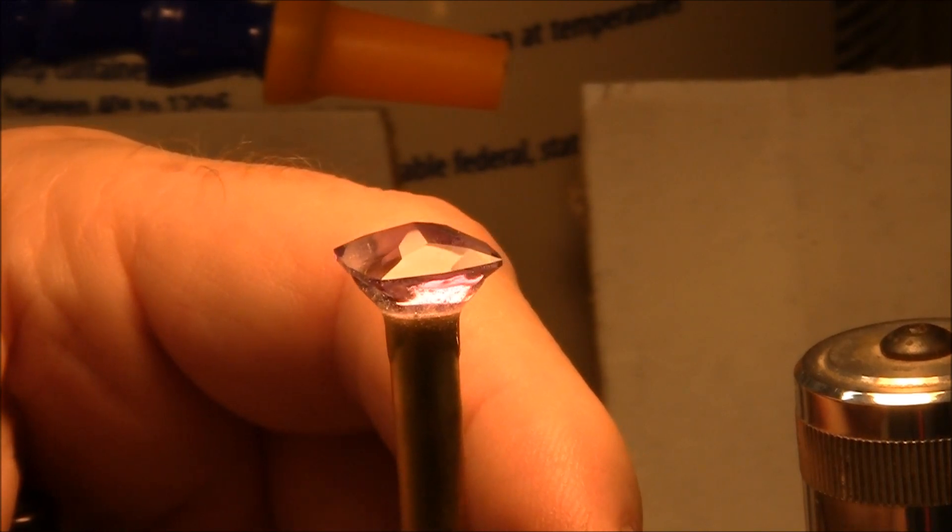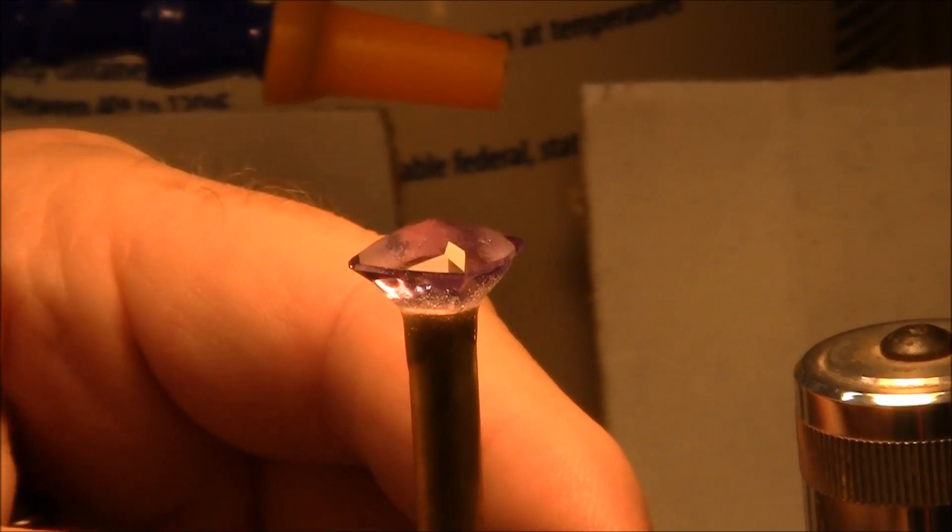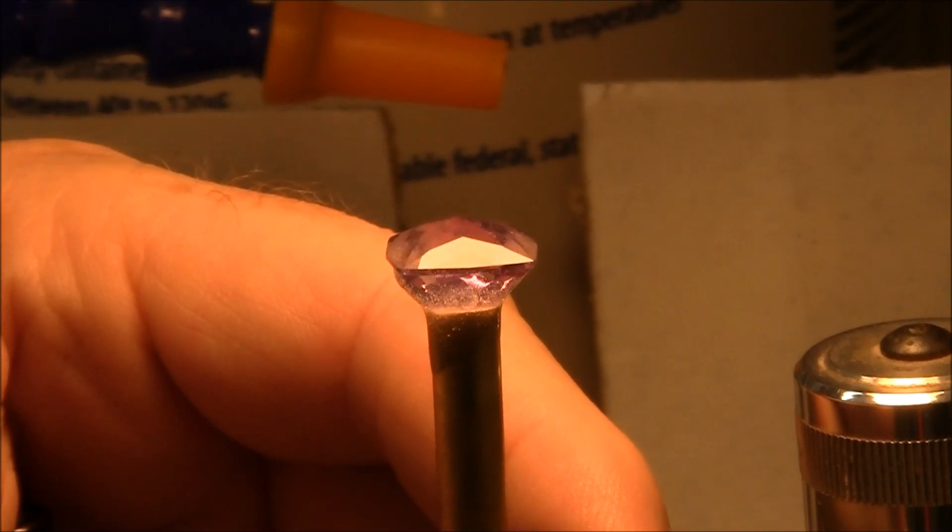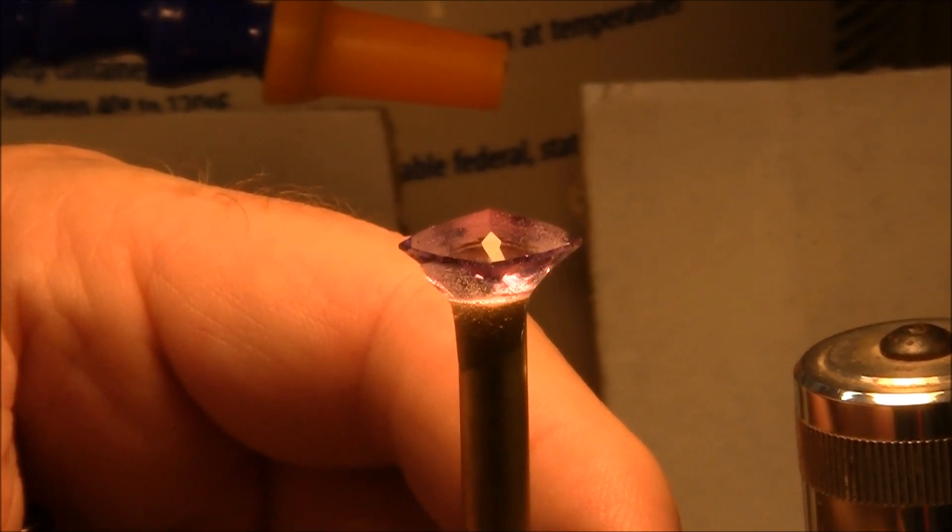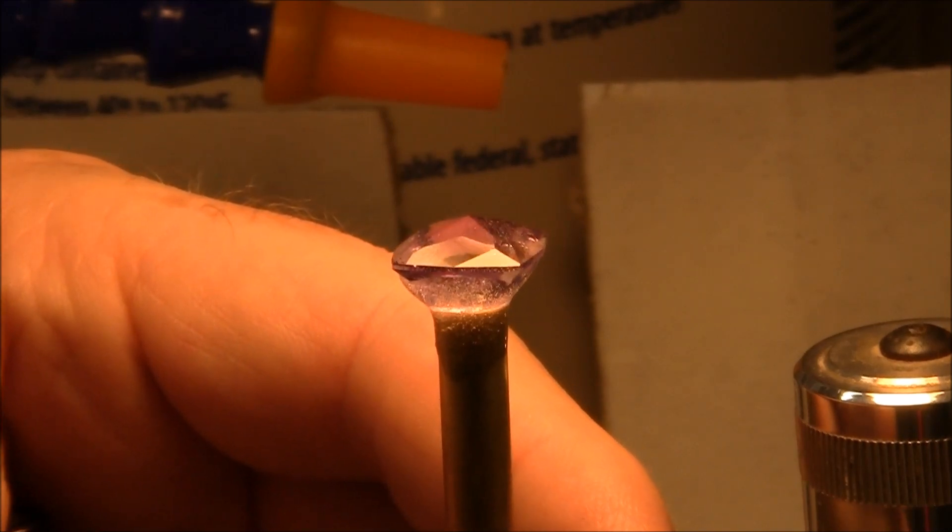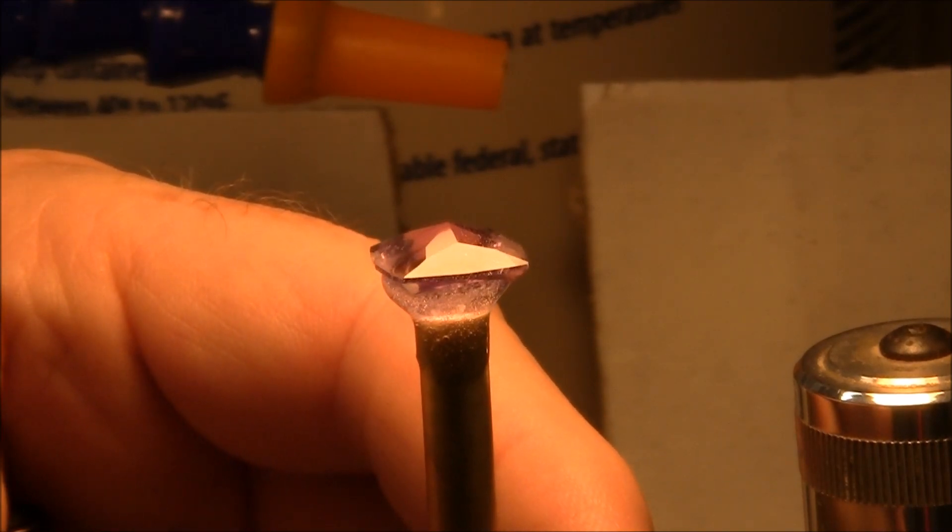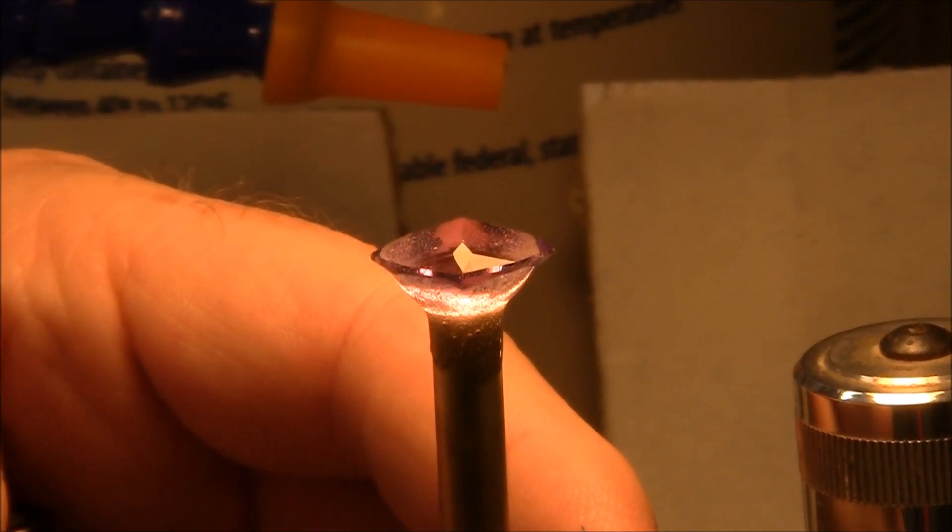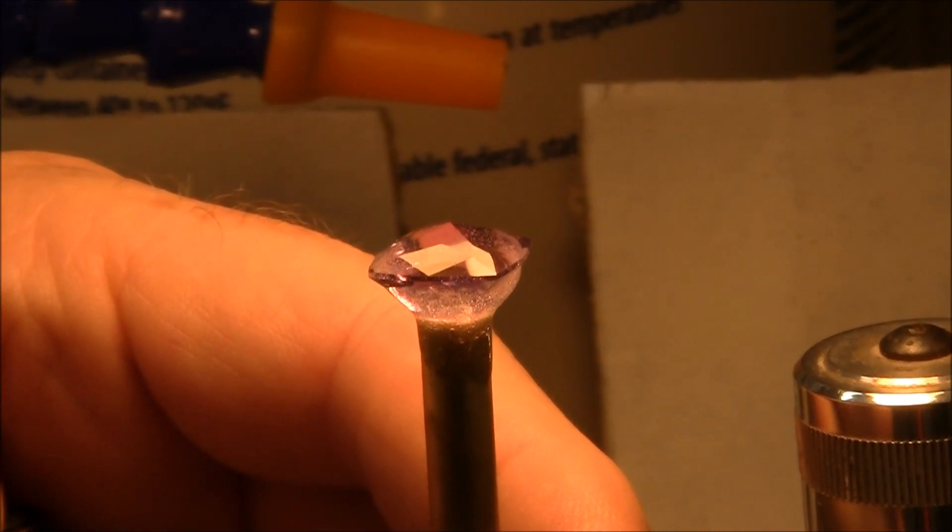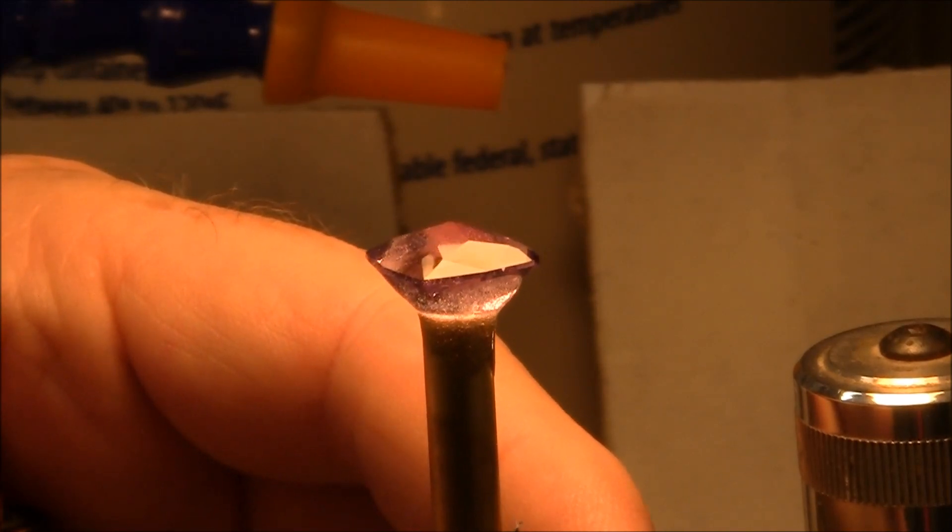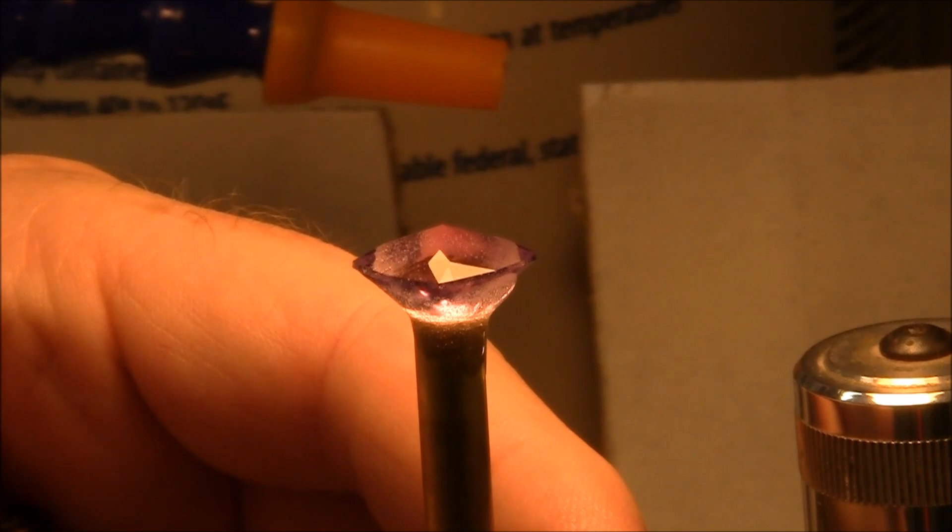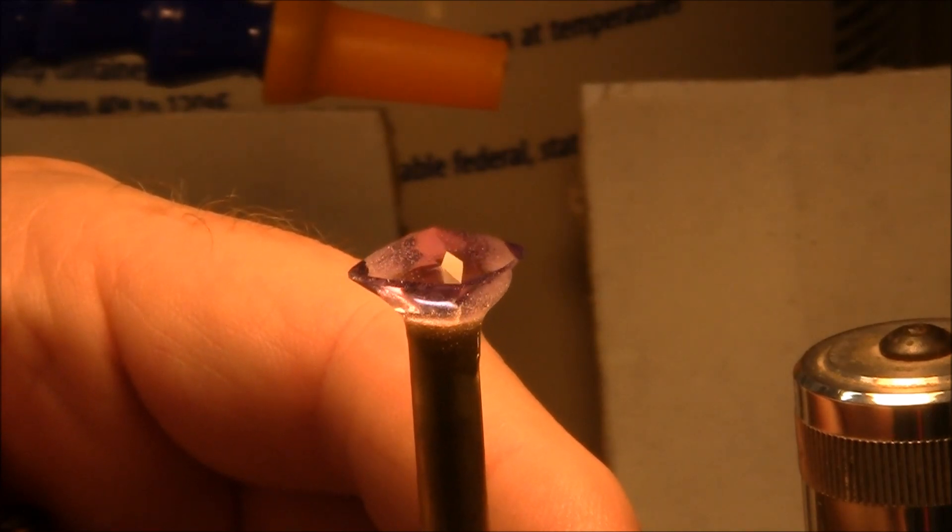I've got the gemstone completely polished. The only thing I've got left to do now is cut and polish the table facet. I used a cerium oxide lightning lap polishing disc and the polishing went very fast. I didn't have any problems.